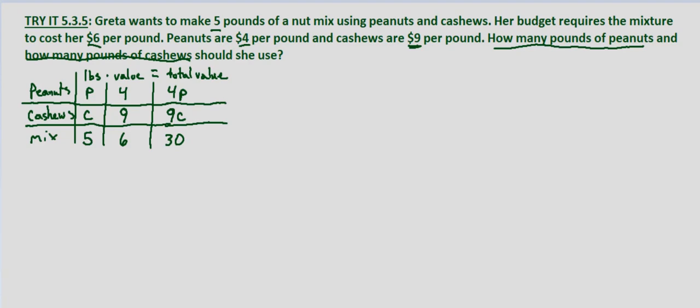From the table we can set up a system of equations. The number of pounds of peanuts plus the number of pounds of cashews equals 5 pounds, so P plus C equals 5. The total cost is $30, made up of $4 per pound times P plus $9 per pound times C, giving us 4P plus 9C equals 30.